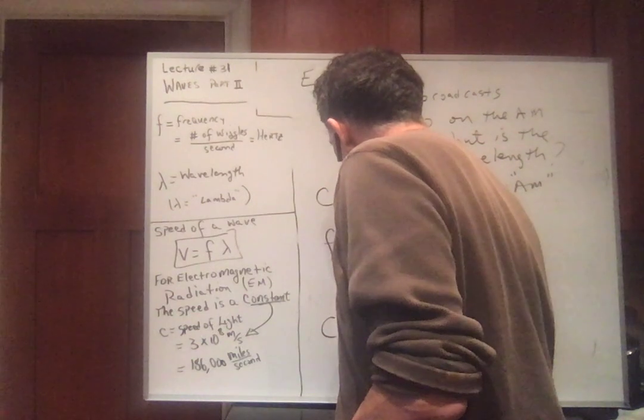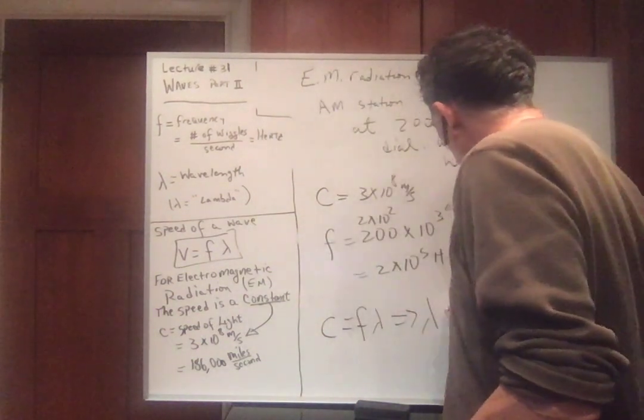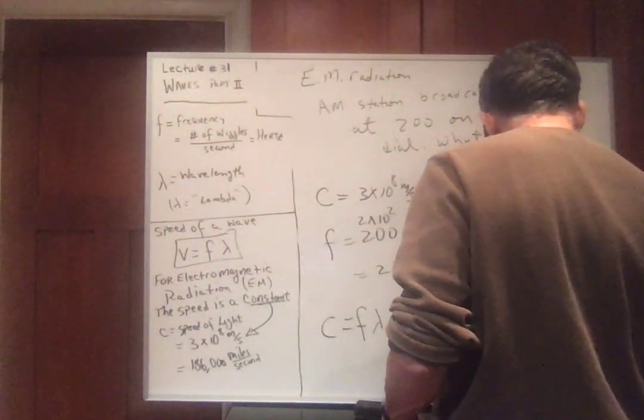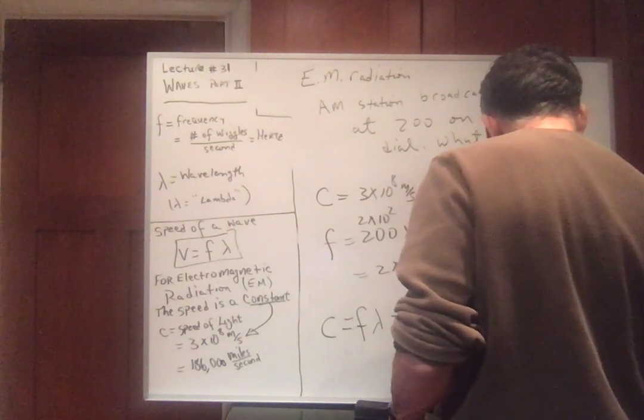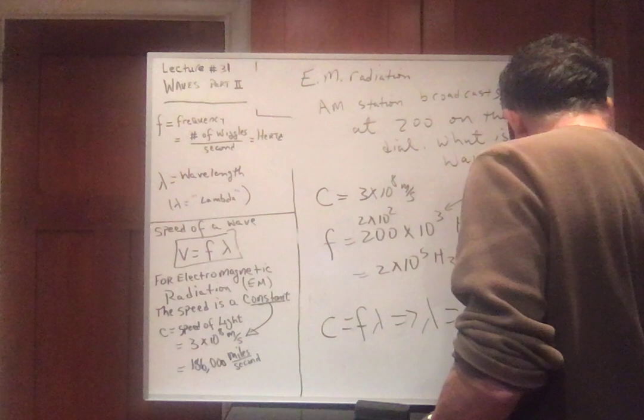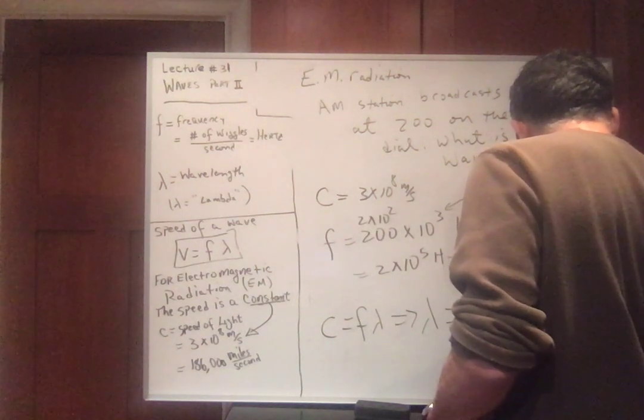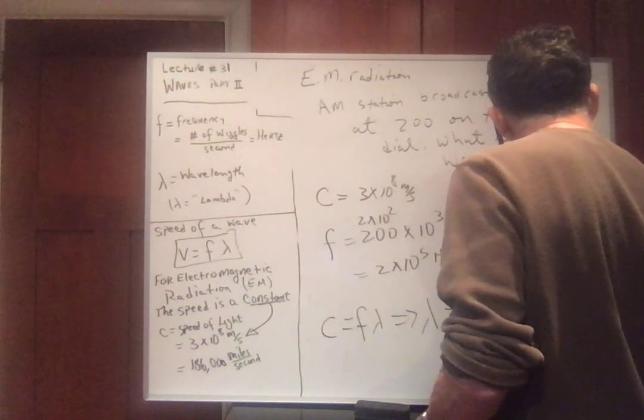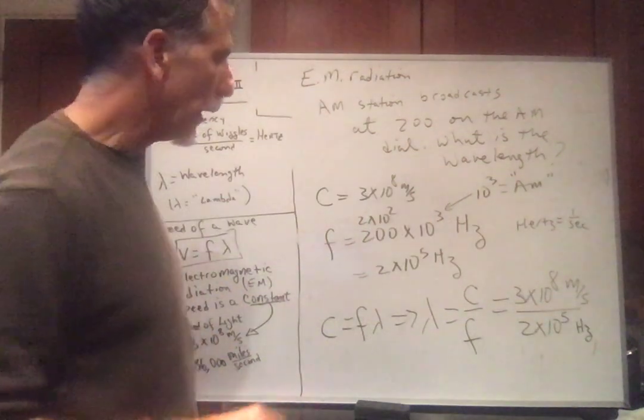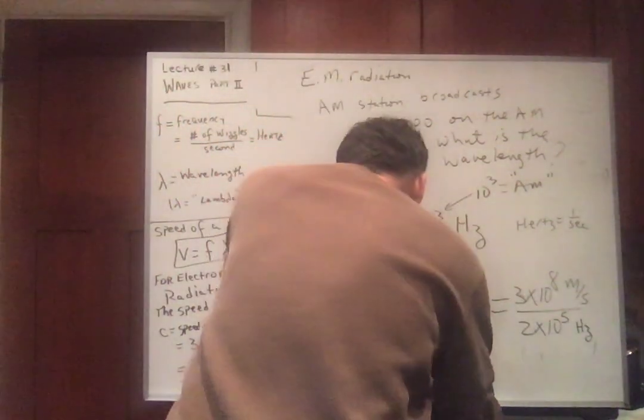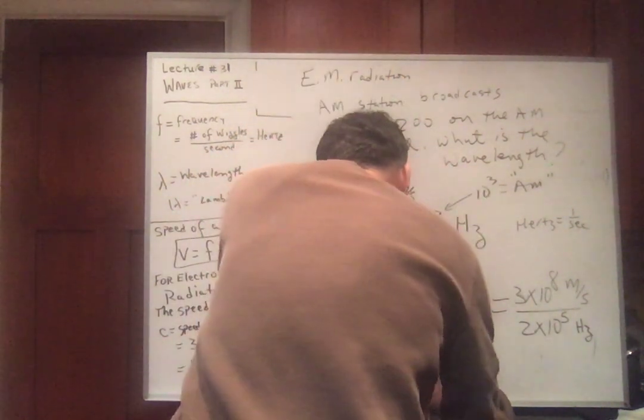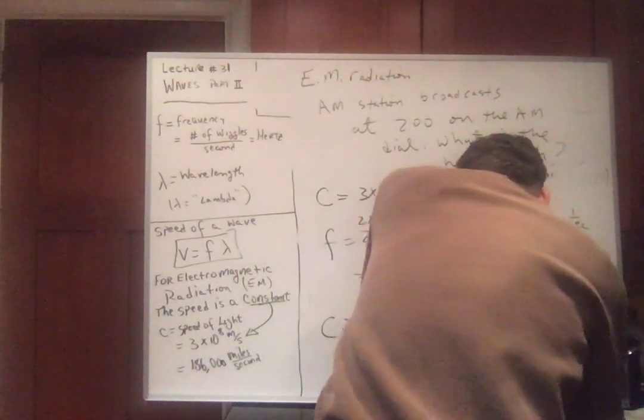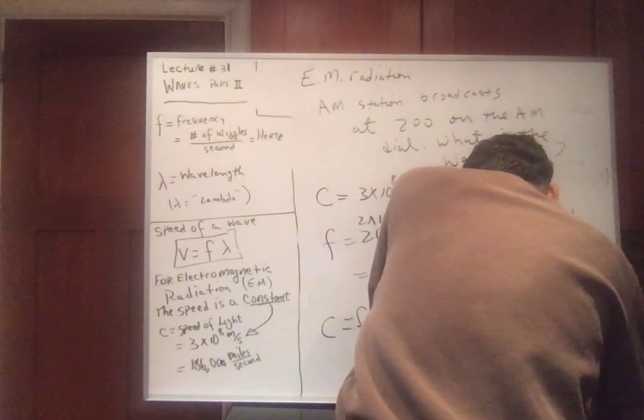Now we have C equals F lambda. Therefore, lambda is C divided by F. Three times 10 to the eighth meters per second divided by the frequency was two times 10 to the fifth hertz. Hertz is one over seconds, number of wiggles over seconds. So it has units of one over time. Two into three is 1.5. So lambda equals 1.5 times 10 to the third or 1.5 kilometers.